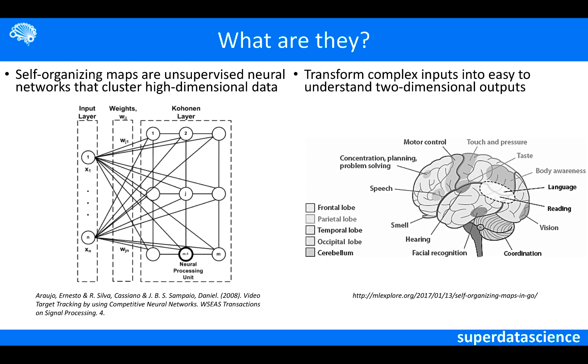An example of self-organizing map in nature is the brain. The brain takes in inputs in the form of senses and maps those inputs onto particular areas. This is exactly what a self-organizing map does after it's trained.